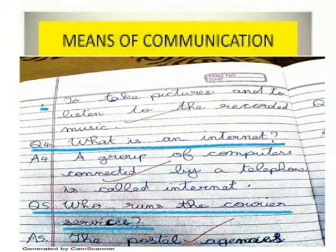Question 4: What is internet? A group of computers connected by a telephone is called internet.